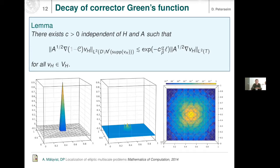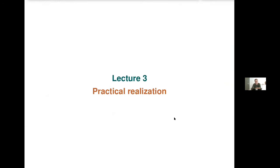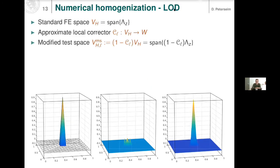This motivates the practical methods to truncate the computation of the operator C. This brings us to the actual definition of my numerical homogenization method, which goes under the name LOD — Localized Orthogonal Decomposition. 'Orthogonal' comes from the orthogonal subspace decomposition studied in the first lecture, and 'localized' refers to the fact that we approximate this orthogonal decomposition by localized computations.